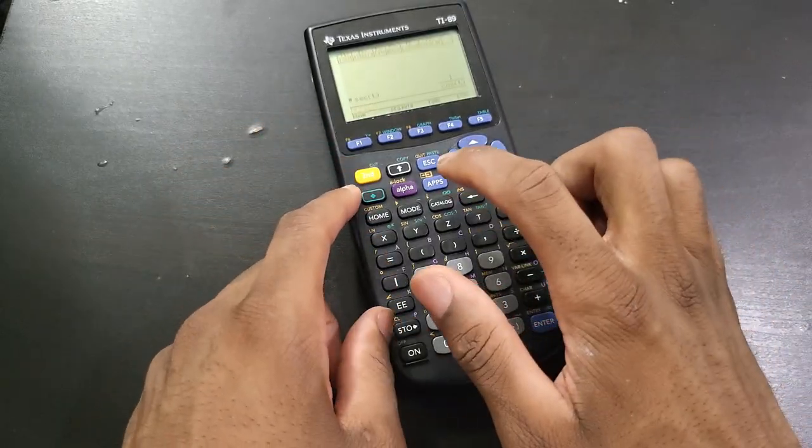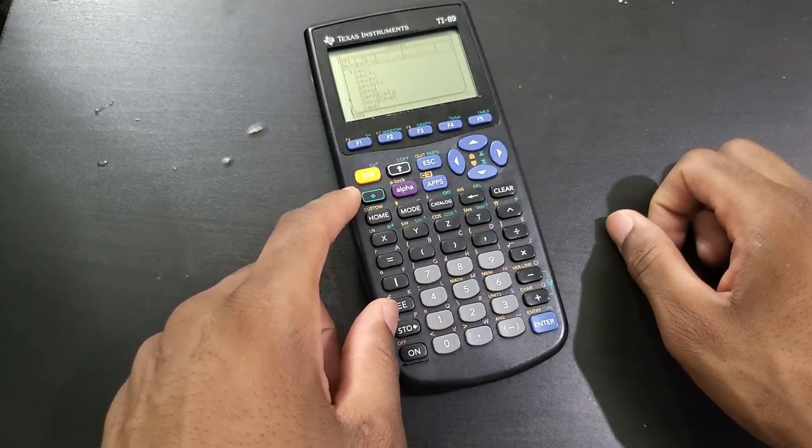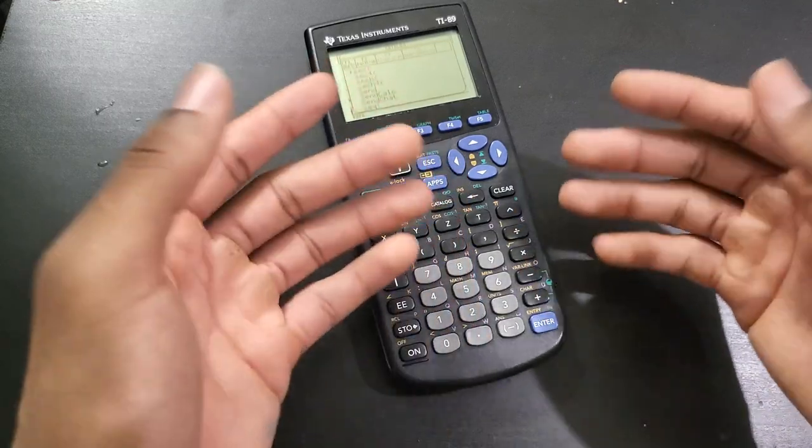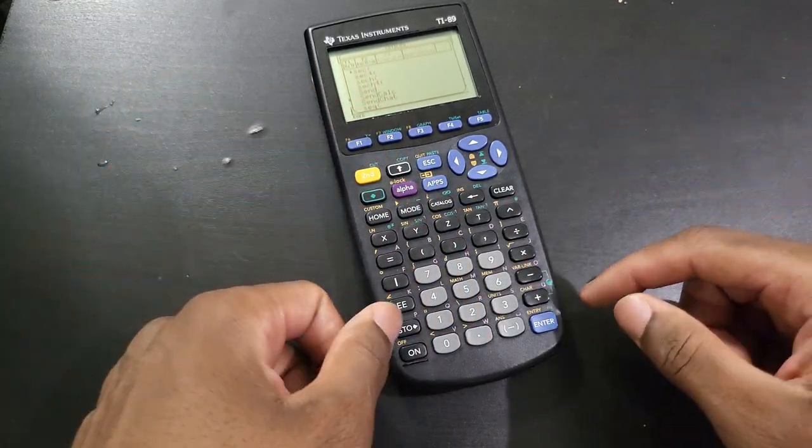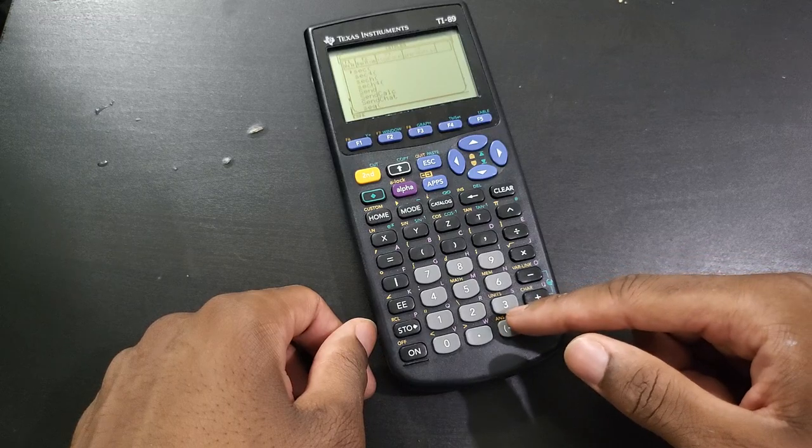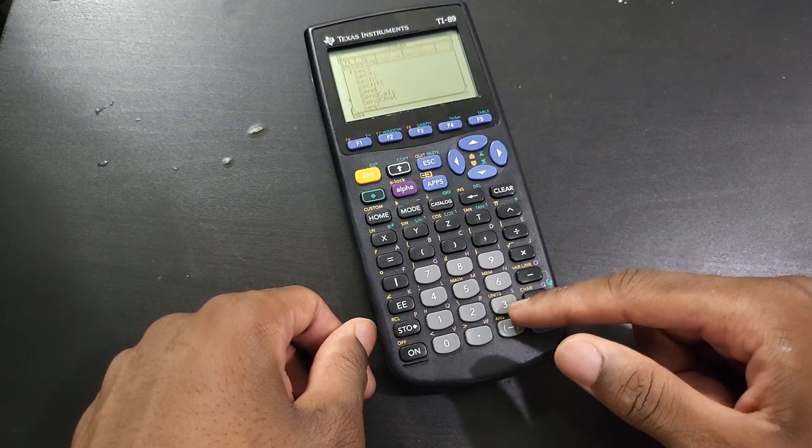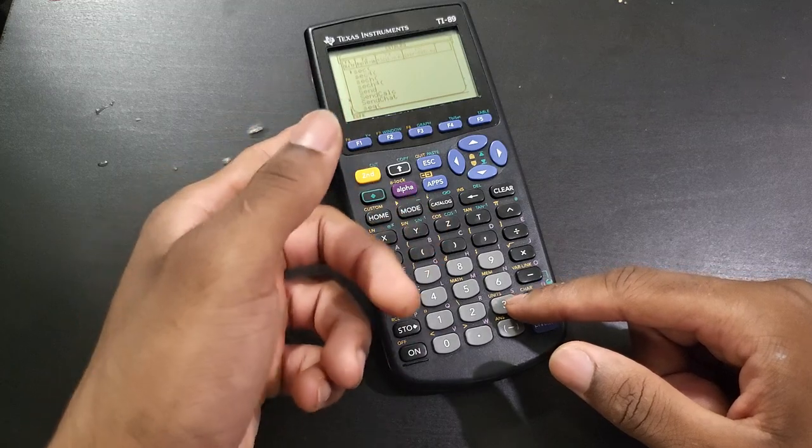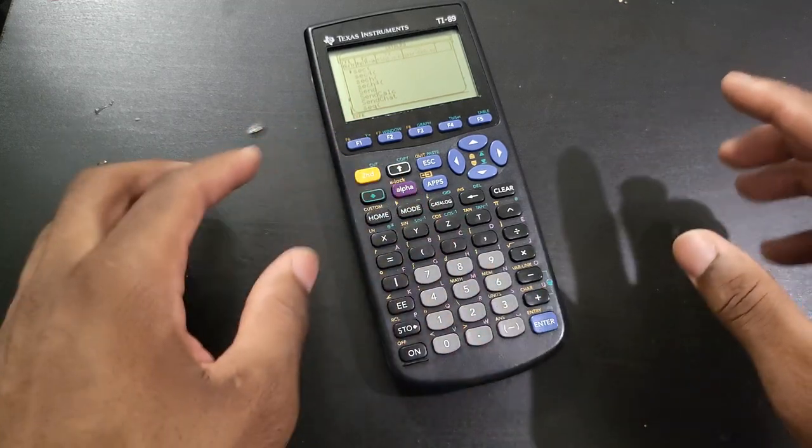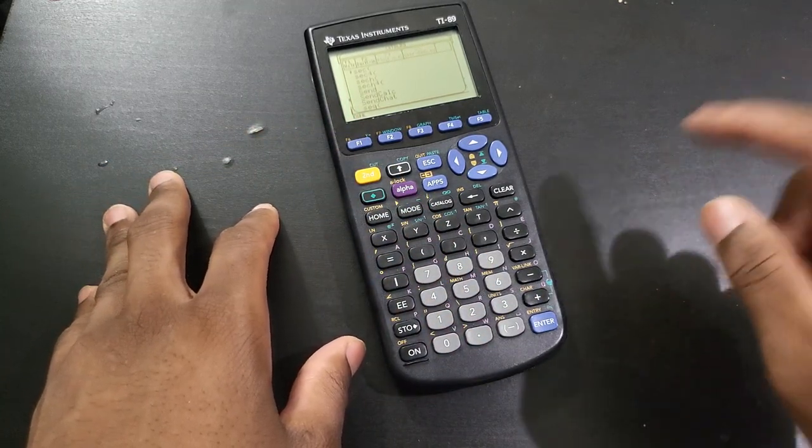The second method is by going through the catalog. Once you are in catalog, the alpha key is locked in automatically, so all you have to do is press the corresponding key. For secant, it's going to be three.